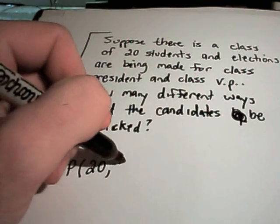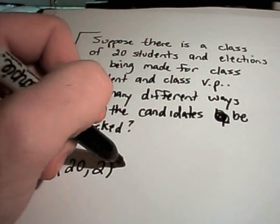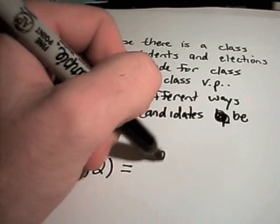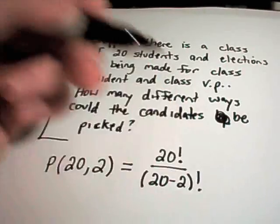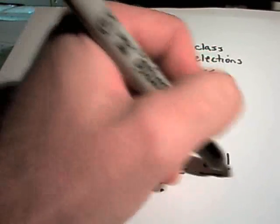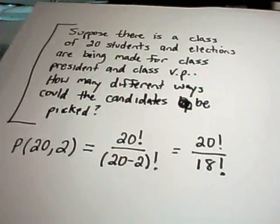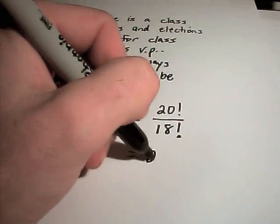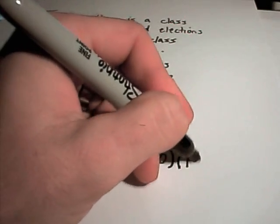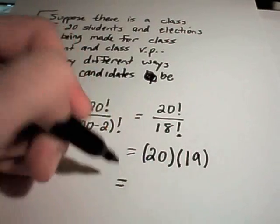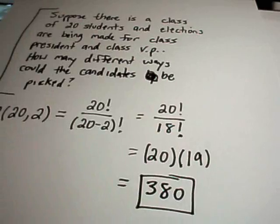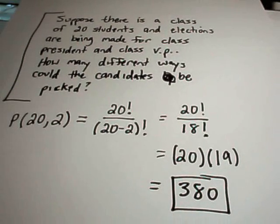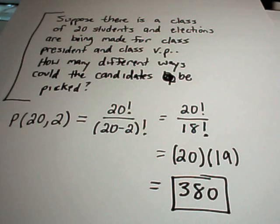There's 20 objects to choose from and I have to choose two of those. Okay, so that's 20 factorial over (20 minus 2) factorial. So that's 20 factorial on top, 18 factorial on the bottom. If you were to write things out and cancel, you would see that you would be left with 20 times 19, and if you multiply out 20 times 19 you'll get 380. So with a class of 20 students, there's 380 different tickets where one person is president and someone else is vice president.